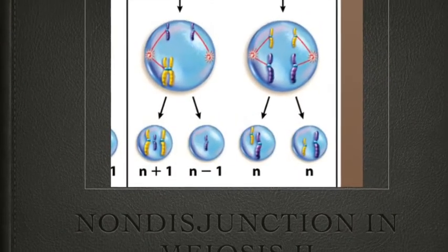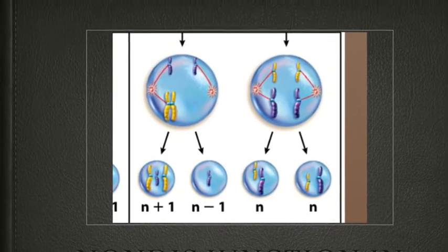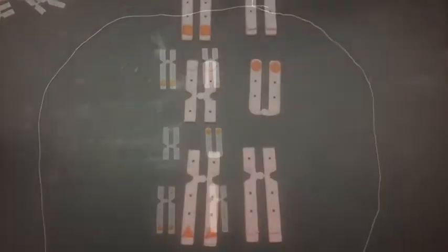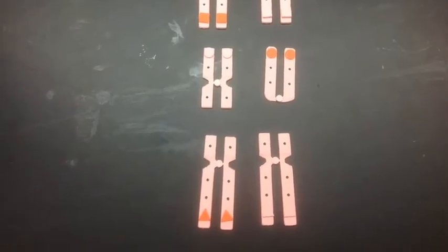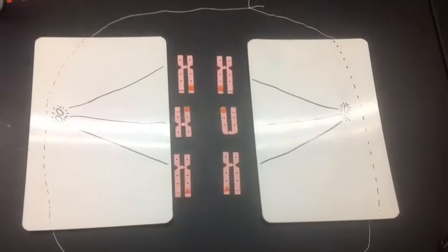Nondisjunction in Meiosis II. A nondisjunction occurs when chromosomes and sister chromatids fail to separate. In this model, everything in meiosis I is the same until it reaches meiosis II. One of the chromosomes fails to separate during this stage.